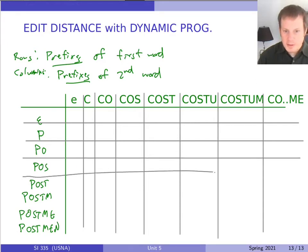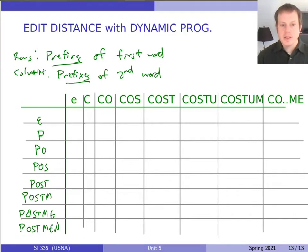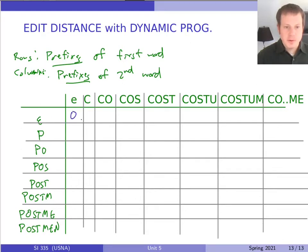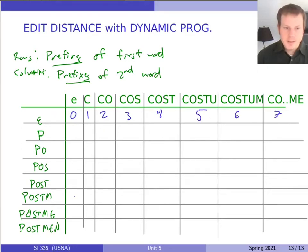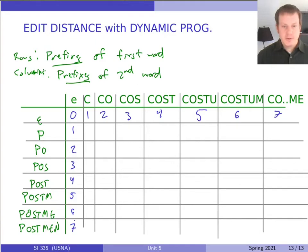Every entry needs two pieces of information — common to all dynamic programming problems: the optimum value at that point, and how we got there. We start with the easy part: the first row and first column. Empty string to empty string takes zero edits. Empty string to 'C' is one edit, to 'CO' is two, and so on up to seven. The same pattern goes down the first column. There's a lot of symmetry here, since turning 'postman' into 'costume' is really the same in reverse as turning 'costume' into 'postman'.